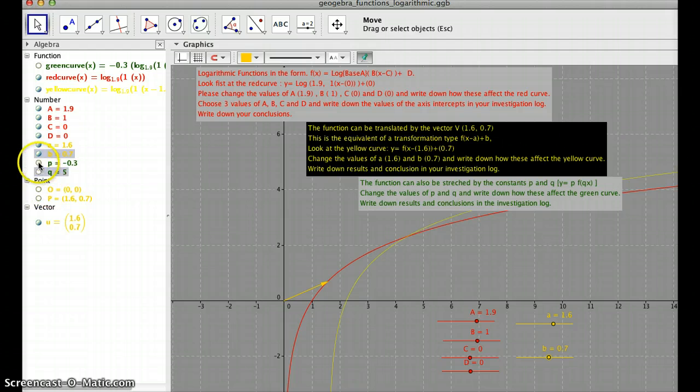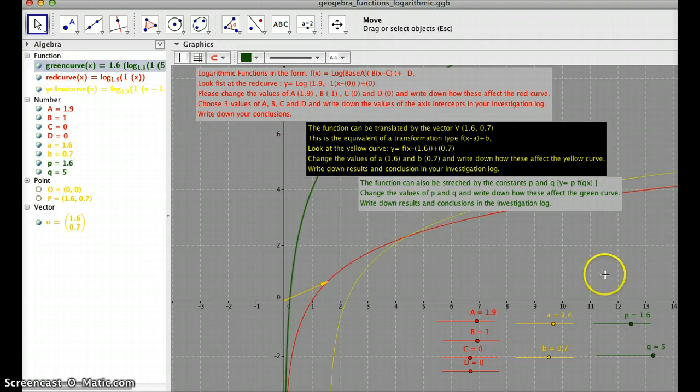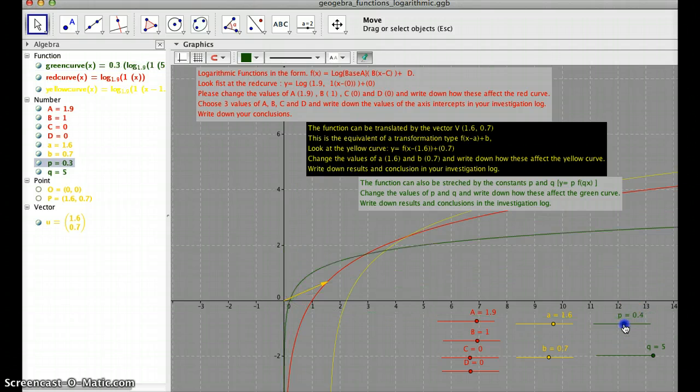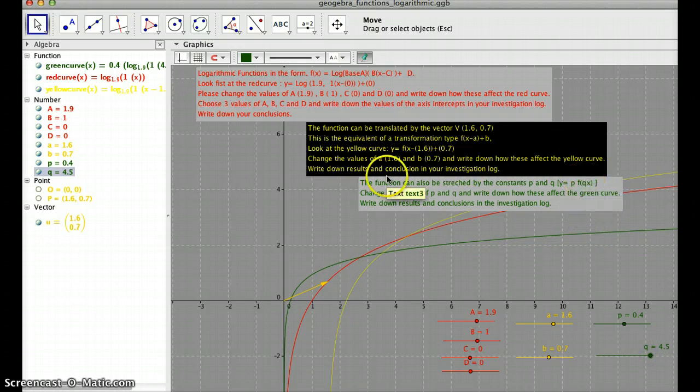And then same thing for the green part. Now we have two factors, p and q, and they are stretching the y first, and the x-axis, the q, because it's multiplying times x. And that's all for now. Thank you.